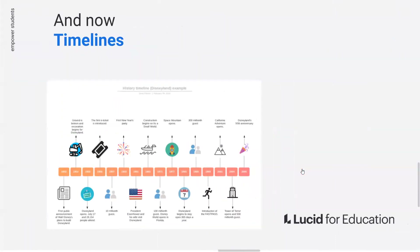Timelines are also easy to create on Lucidchart and help students organize information so they can critically analyze it — such as laying out the events leading up to the American Revolution or the timeline of Disneyland — and then determine causes and effects.